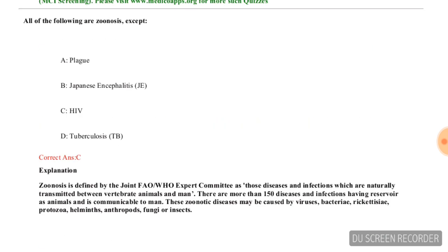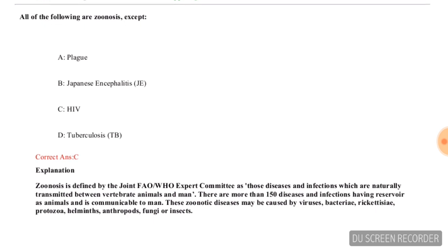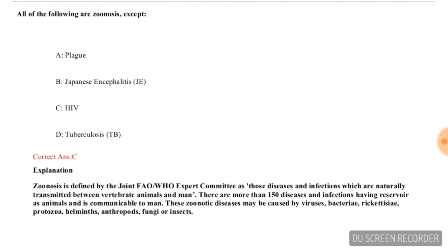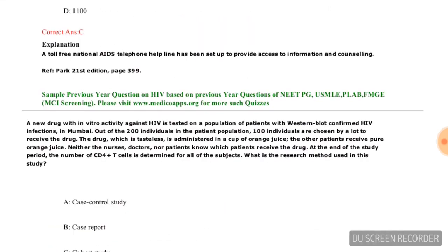Next question: All of the following are zoonosis except — options are plague, Japanese encephalitis (JE), HIV, or tuberculosis (TB). The correct answer is HIV, as HIV is not a zoonosis.